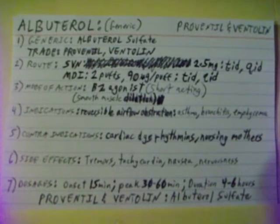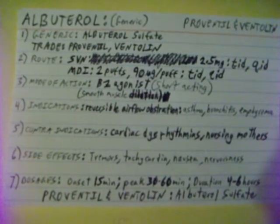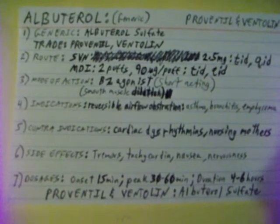Albuterol sulfate, generic name Albuterol sulfate, trade or brand name Proventil and Ventolin. Albuterol can be given by small volume nebulizer at 2.5mg TID (three times daily) or QID (four times daily). It can also be given by metered dose inhaler, two puffs of 90mcg per puff, TID or QID.